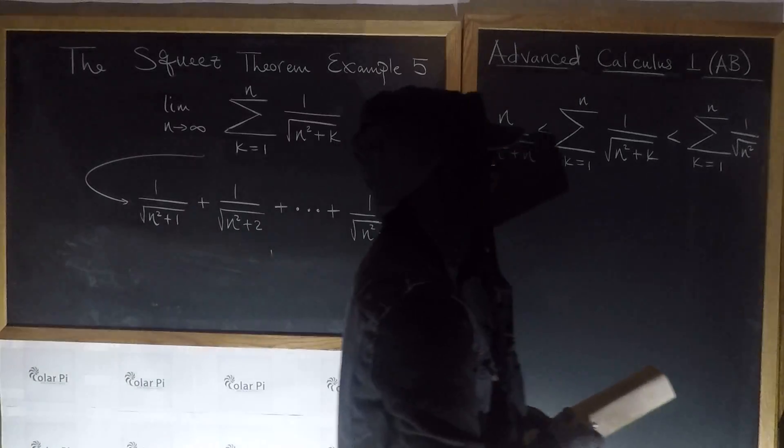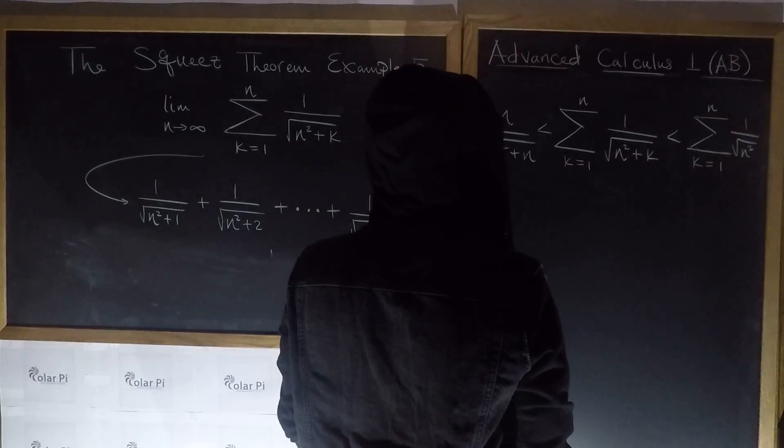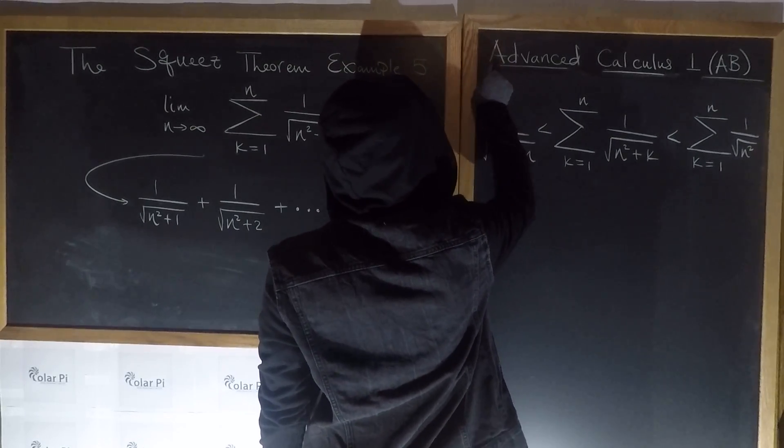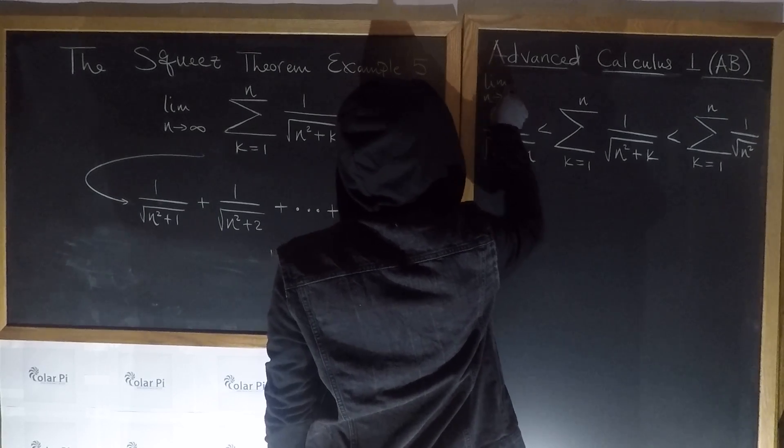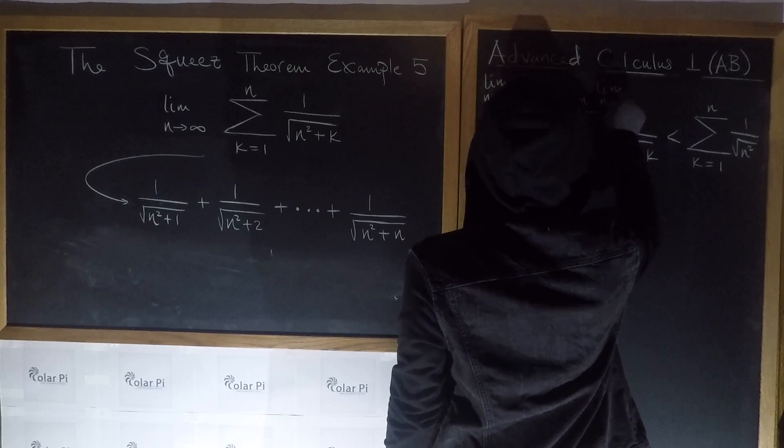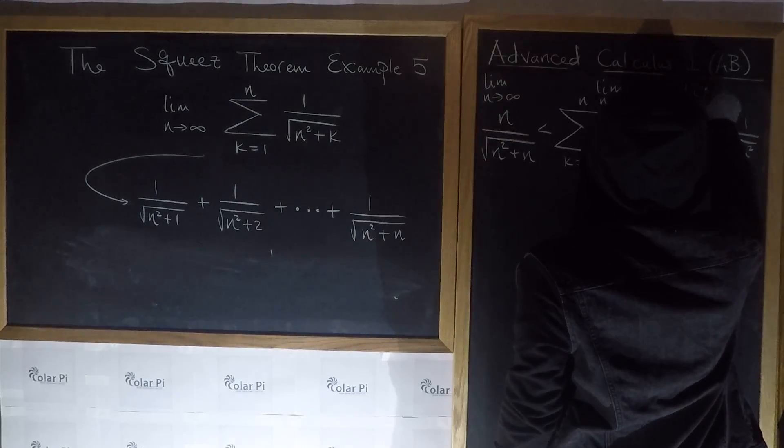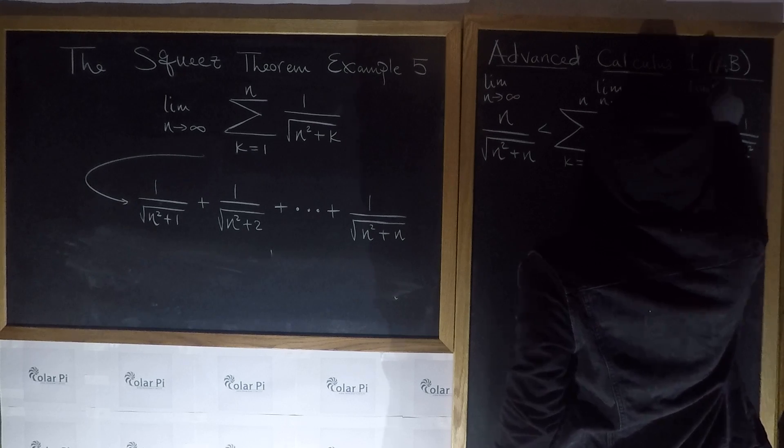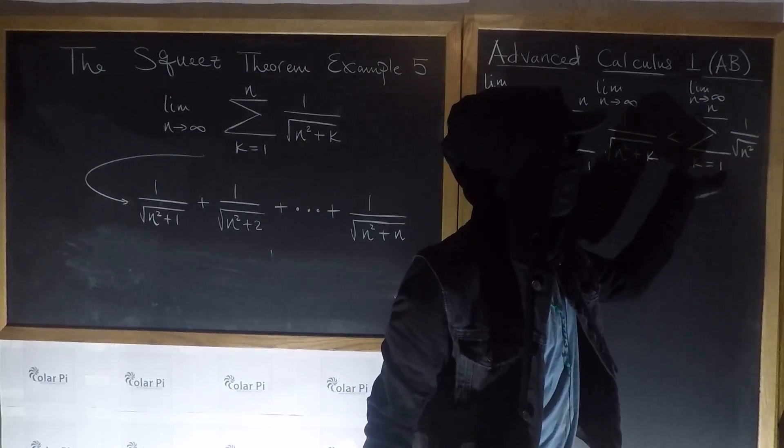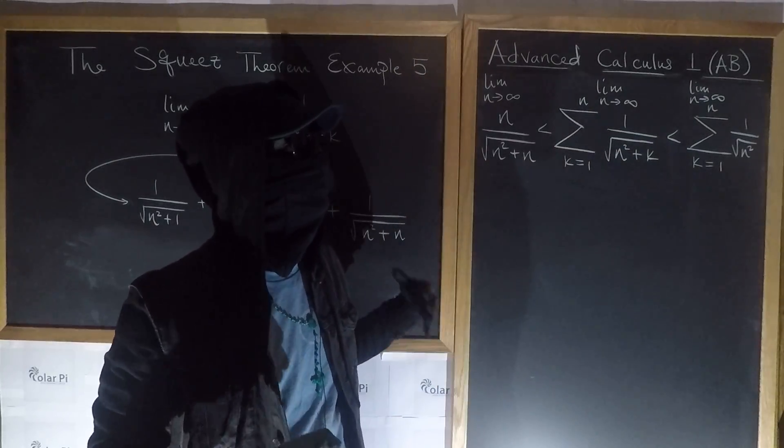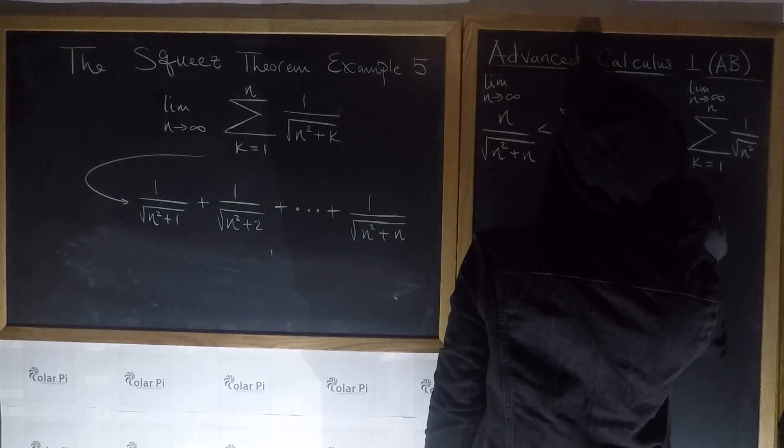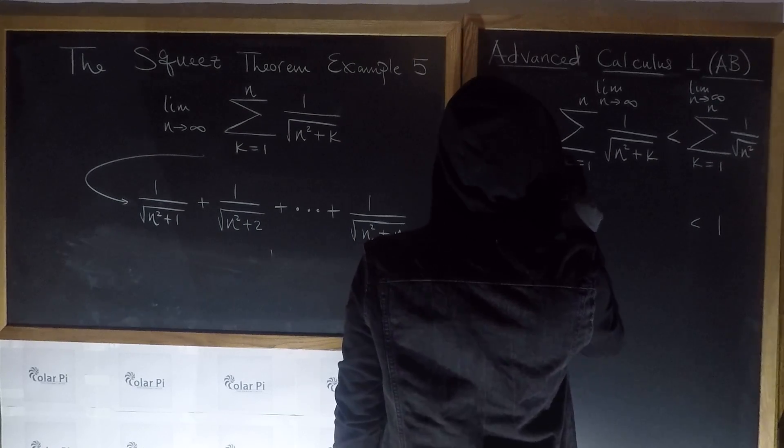So the only thing left to do, then, is, now that I've justified this inequality, is to say limit as n goes to infinity, and to save myself some writing, I'll write the limit up top. So limit as n goes to infinity of this fella, and then limit as n goes to infinity, our limit of interest, and then limit as n goes to infinity. Now, let's start where it's easiest. So here, we said that this sigma expression is going to turn into n over n, which is 1. So as n goes to infinity, this is going to become 1. So we've got 1, and then, less than our limit of interest, I'll write them one more time.